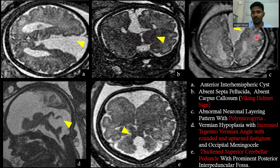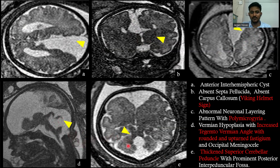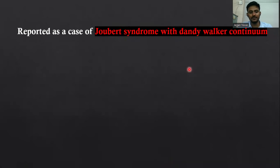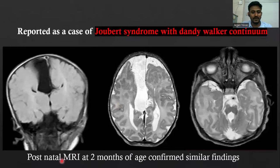There is an abnormal neuronal layering pattern seen in the right frontal lobe with polymicrogyria. We can see the hypoplastic vermis with increased tegmental vermian angle, and there is an upturned and rounded vermis and small occipital meningocele. We can appreciate thick and superior cerebral peduncles with prominent posterior interpeduncular fossa. We reported this case as Joubert syndrome with Dandy-Walker continuum. The patient underwent postnatal MRI which also revealed similar findings.